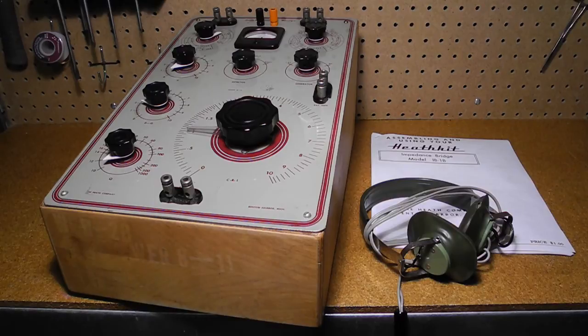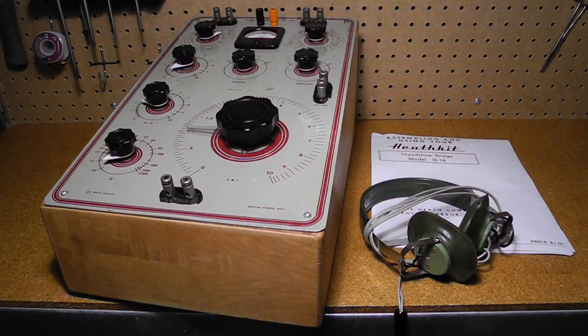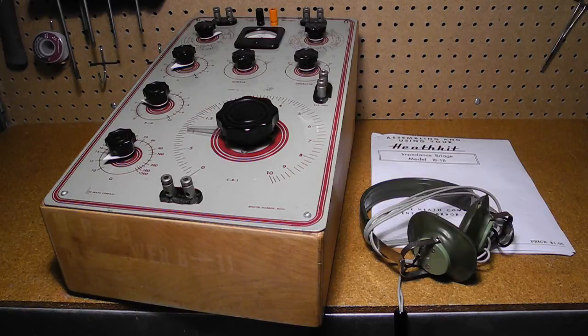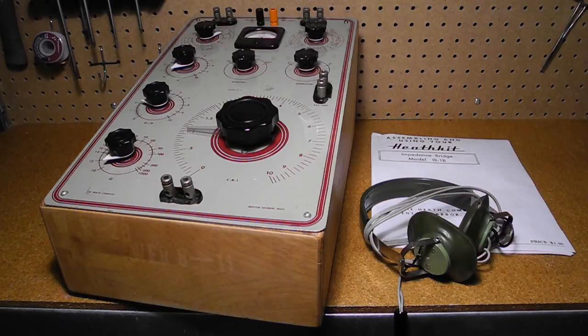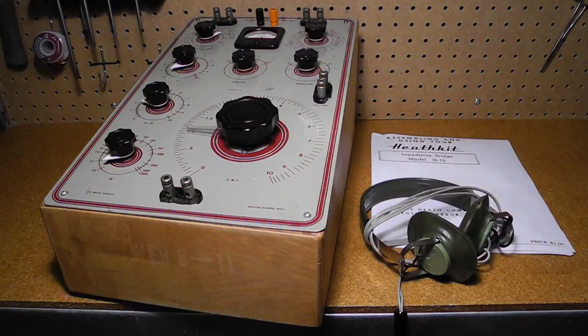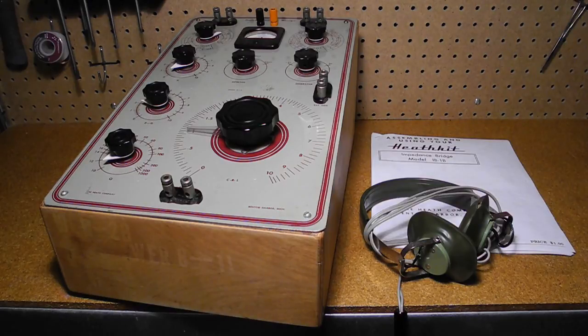The IB-1B Impedance Bridge was one of the earlier test equipment kits offered by Heathkit. It was similar to commercial units of the time and was economical as it was offered in kit form. While large and awkward to use by today's standards, after over 60 years, it's still functional. And with its dials and meter, I think it's quite fun to play with and to impress others. I hope you enjoyed this video. If so, please check out my other YouTube videos on vintage Heathkit radios and test equipment.